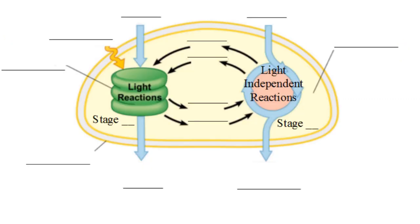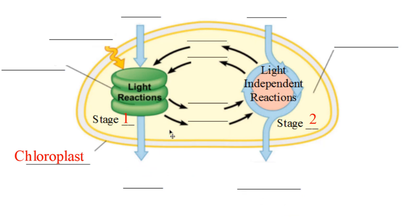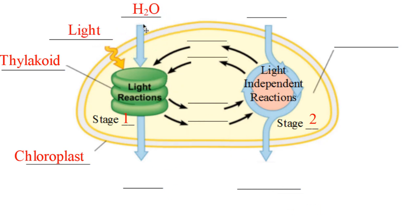Now we're going to go to our diagrams for photosynthesis. This is an overall diagram. We have Stage 1 and Stage 2. All of this is happening in the chloroplast. Stage 1 is happening specifically in the thylakoids, in these rings right here. The reactants of Stage 1 are water coming in and light coming in to break the bonds of the water.